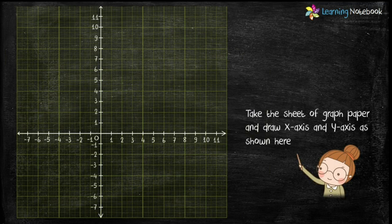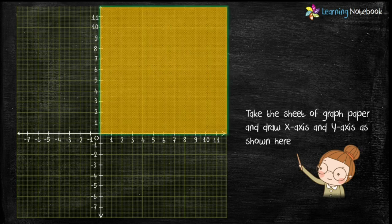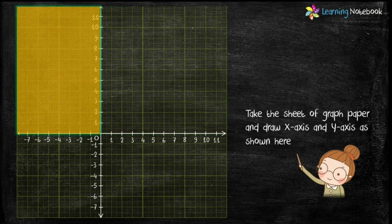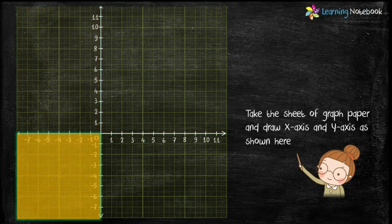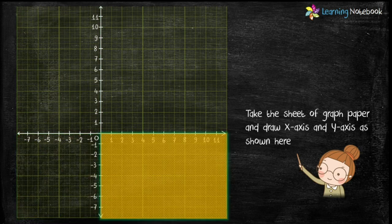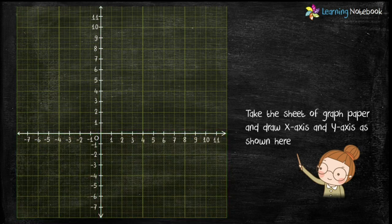Take the sheet of graph paper and draw the x-axis and y-axis as shown here. As you can see, the two axes x and y divide the cartesian plane into four parts. Each of the four parts is called a quadrant, and they are numbered one, two, three, and four anti-clockwise.